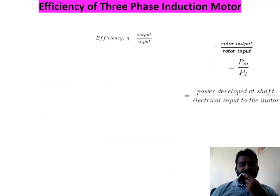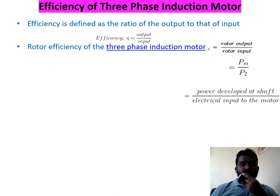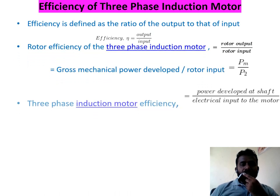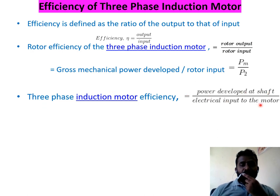Efficiency of a three-phase induction motor: efficiency is defined as the ratio of output to input. Rotor efficiency is rotor output divided by rotor input, equal to Pm by P2. Three-phase induction motor efficiency equals power developed at shaft divided by electrical power input to the motor.